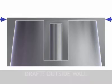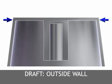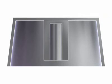Next, draft is applied to the outside wall. Outside-facing walls shrink away from the corresponding die surface and typically require less draft than inside-facing walls.